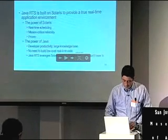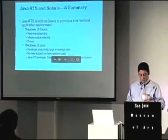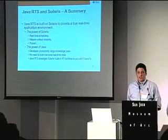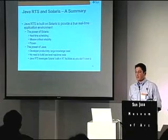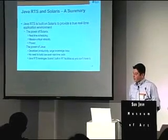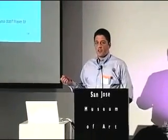I have a slide here that goes into a little bit more detail. Java is built on Solaris because it's a true real-time operating system — you get real-time scheduling and mission-critical reliability. It's proven and has been used in the financial area for many years on Wall Street. The power of Java is that you maintain developer productivity. You want to be able to take advantage of the large knowledge base of Java programmers available. Java developers can remain Java developers — they don't have to employ special object pooling or other tricks to prevent the garbage collector from running at the wrong time. You should be able to just write the code you have to write, solve the problem, and let the Java real-time VM handle all the scheduling for you.